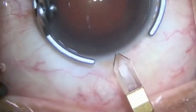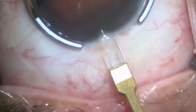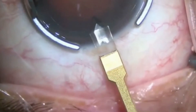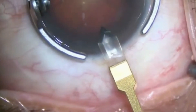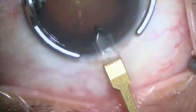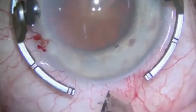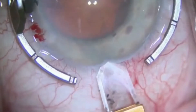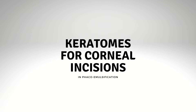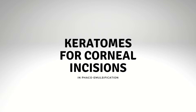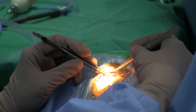The ideal incision should be small, astigmatically neutral, and suture-free. It can be made through an incision in the scleral tunnel or in the clear cornea. The clear corneal incision is the most commonly used due to its self-sealing capability. In this video, we would like to discuss different types of keratomes used during phaco surgery.